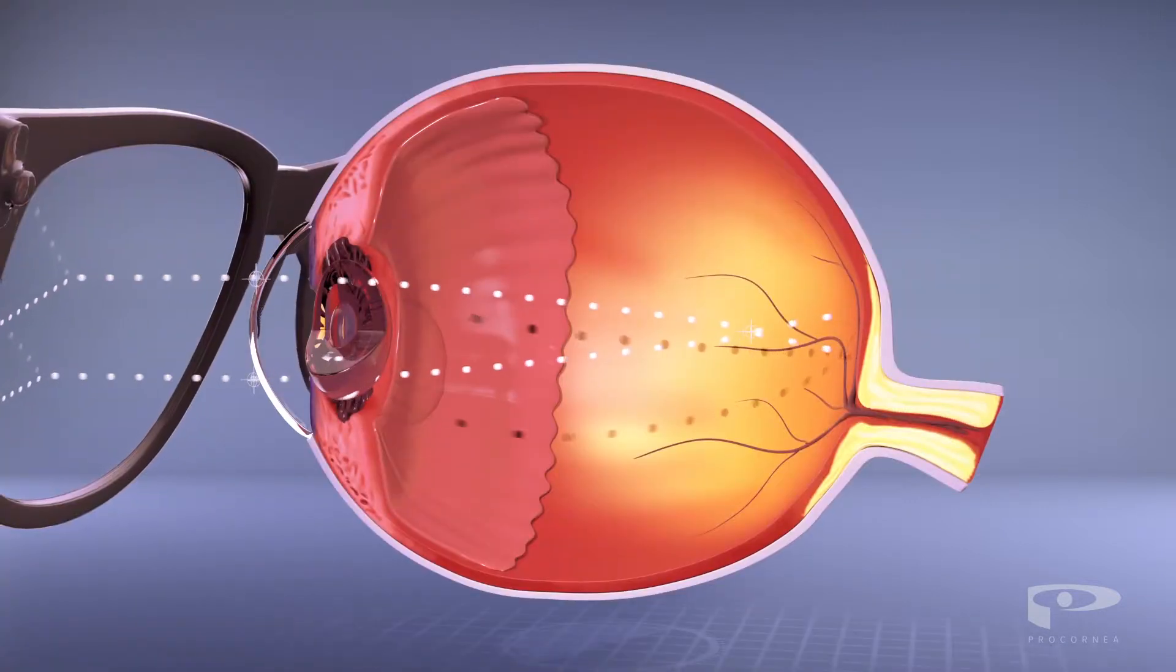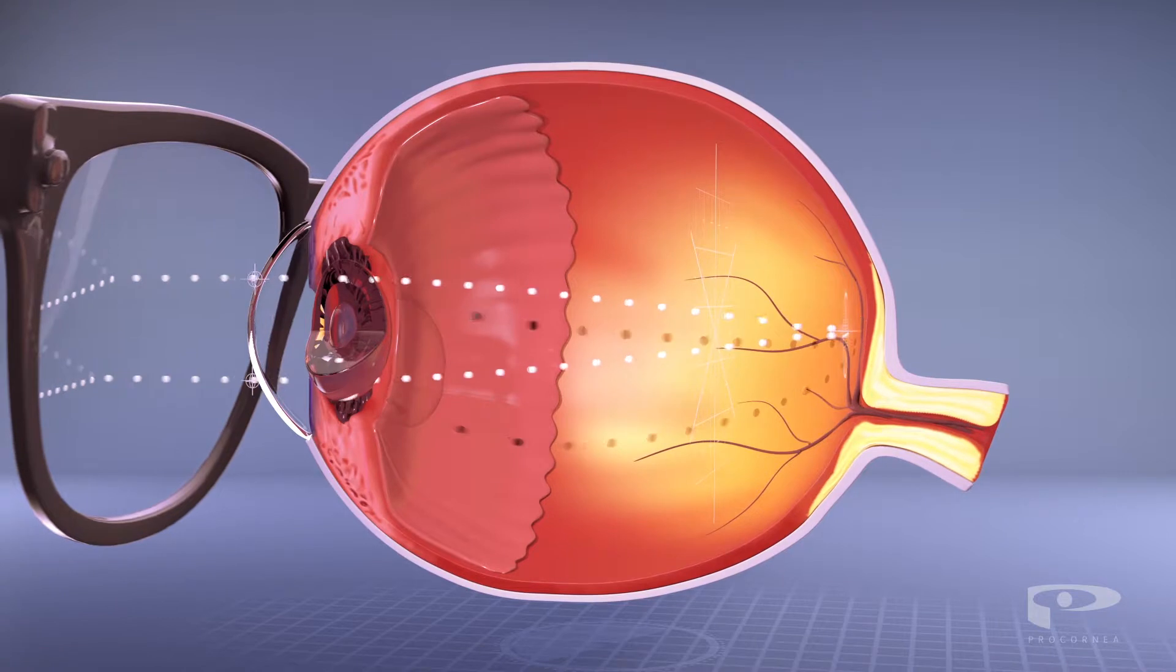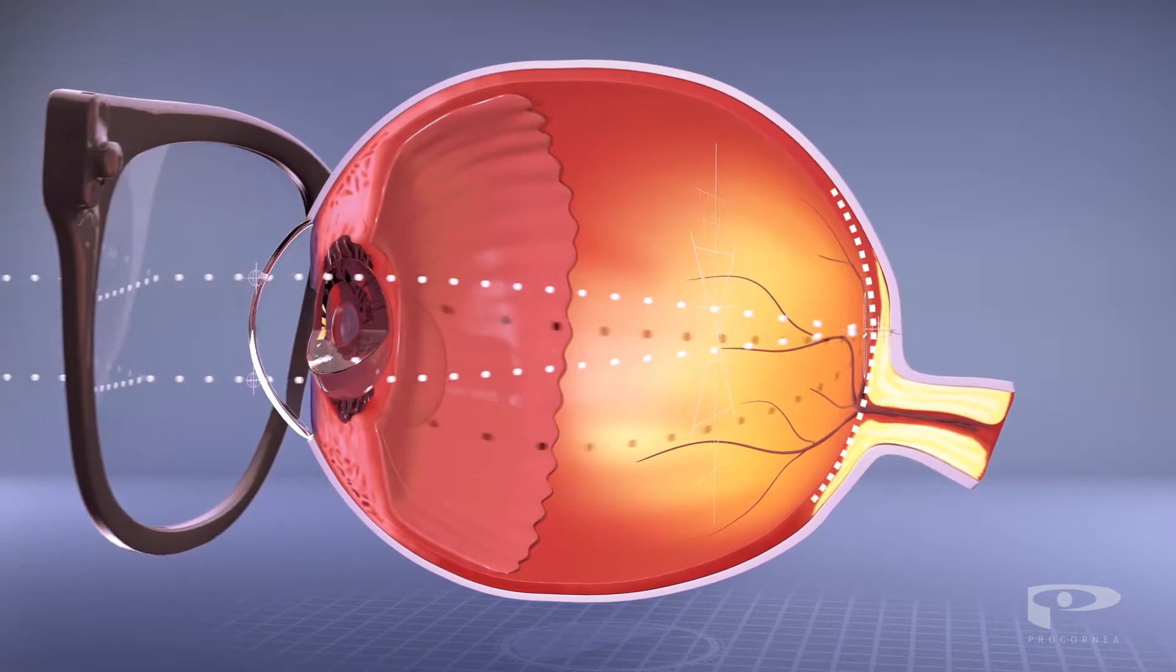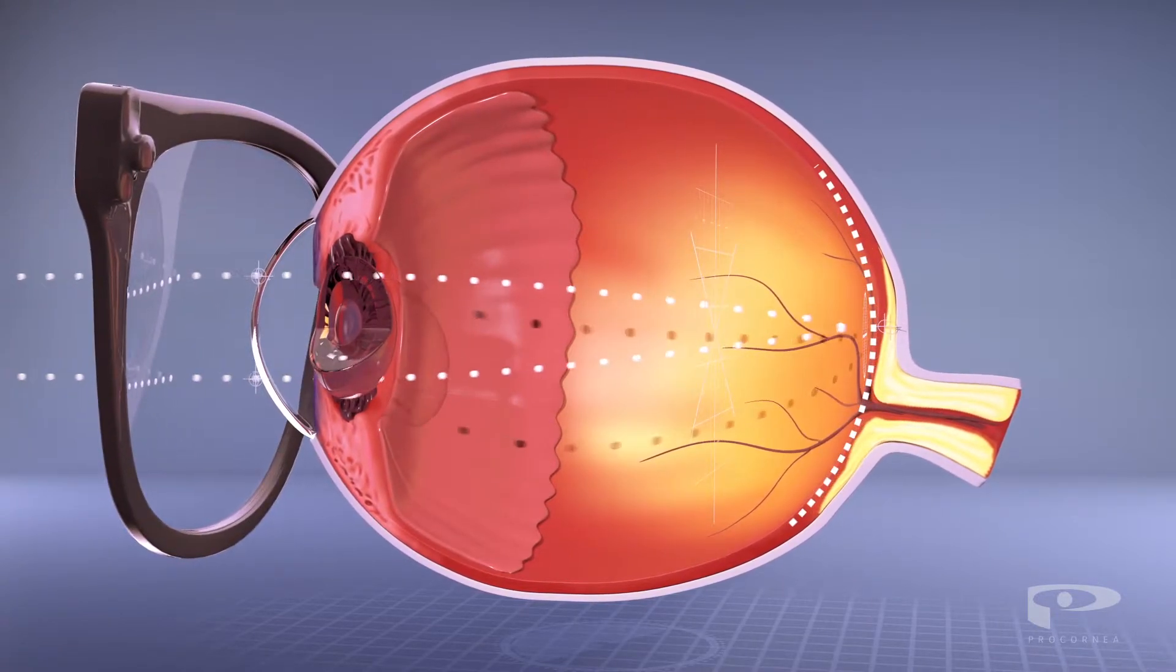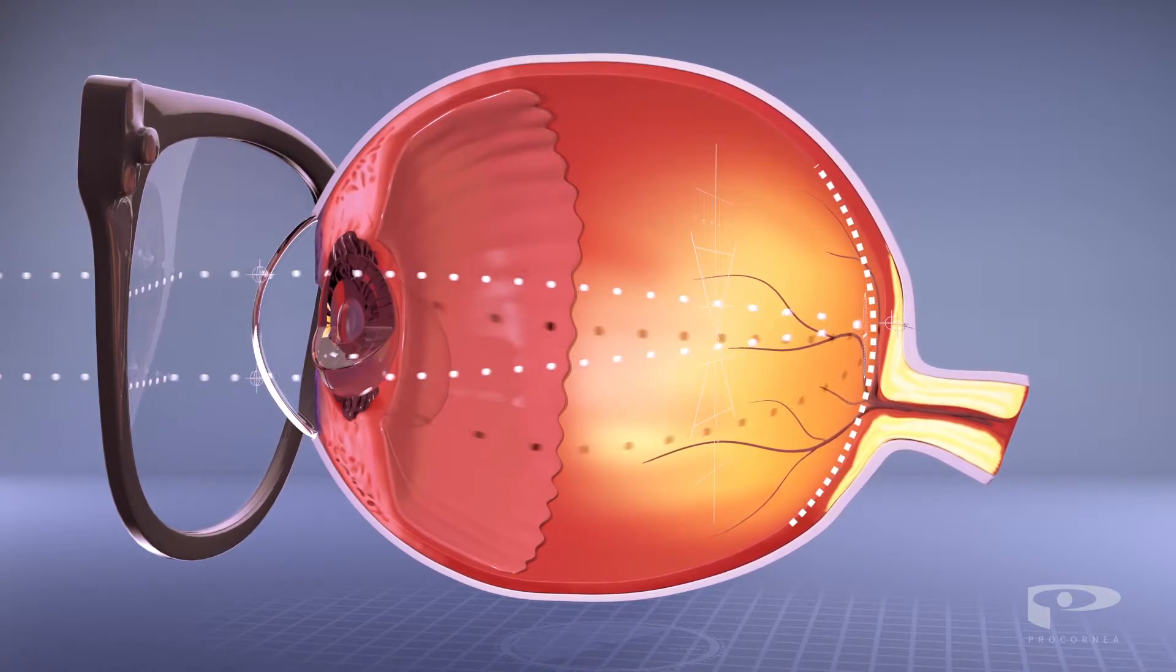Glasses and regular contact lenses can correct myopia by refocusing light back onto the retina. However, glasses can be inconvenient, and regular contact lenses can often lead to irritated eyes.